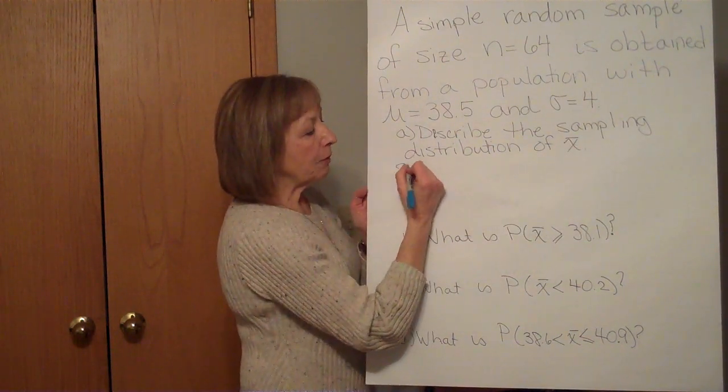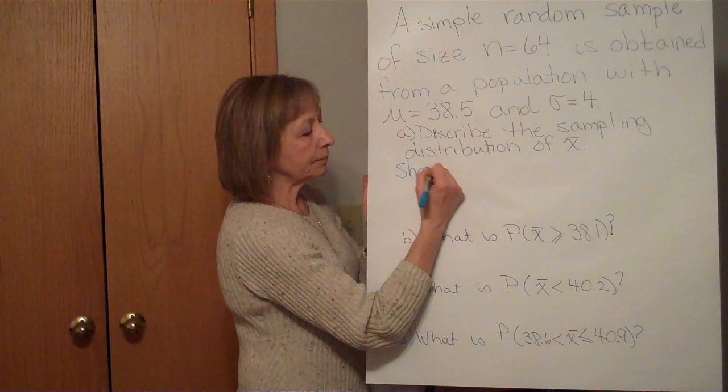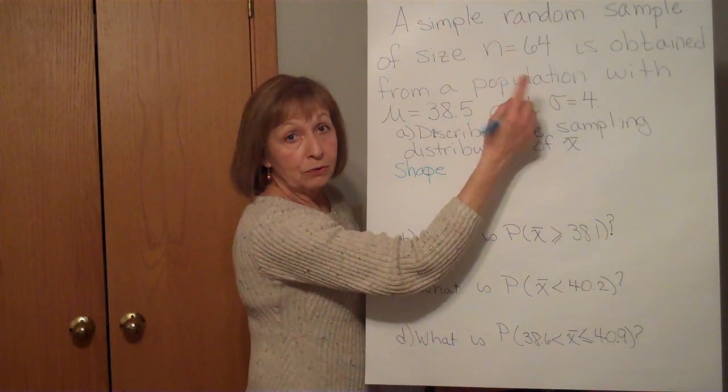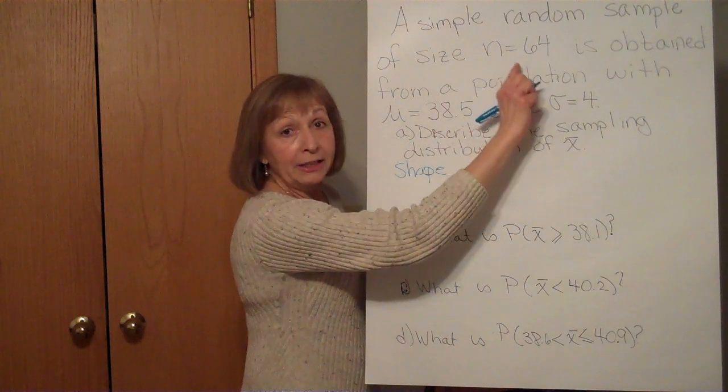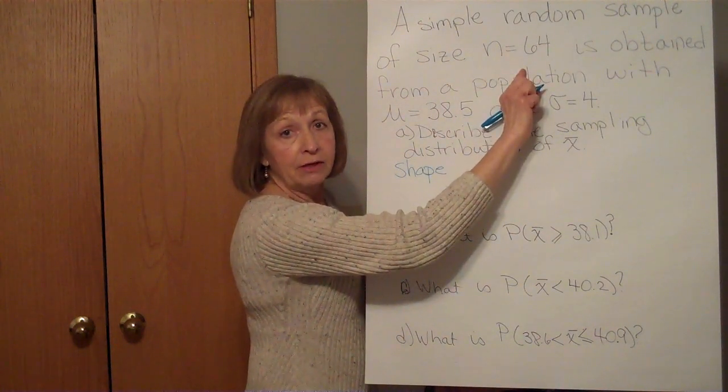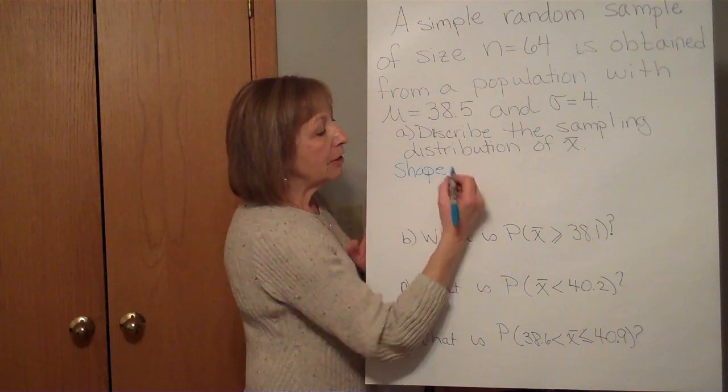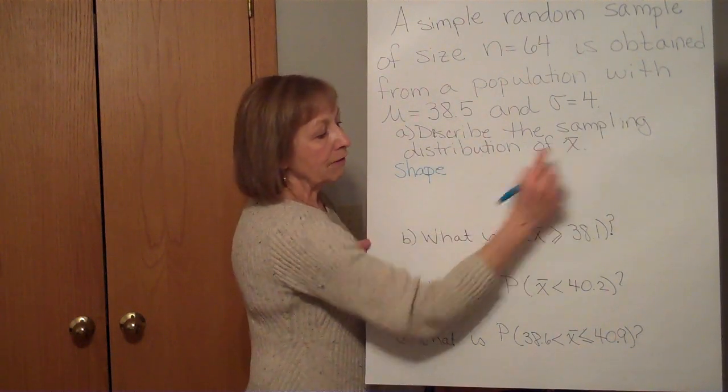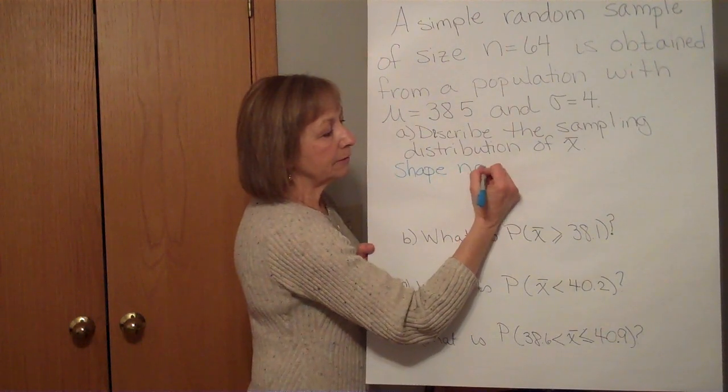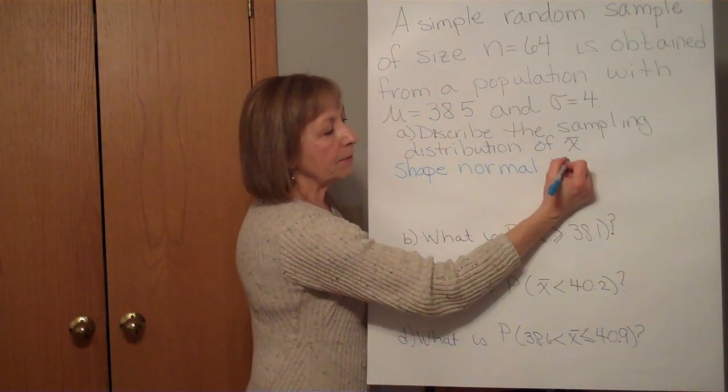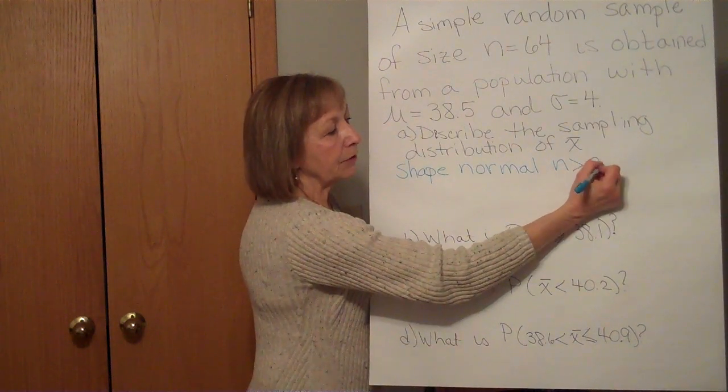Well for our first part, our shape: it didn't say the distribution of the individual numbers was normal, but I do have that my sample size is greater than or equal to 30. 64 is bigger than 30, so the shape of my sampling distribution of the sample mean is normal since my sample size was greater than or equal to 30.